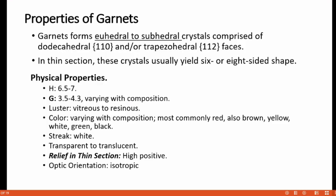When we discuss about the properties of garnet, it shows euhedral to subhedral crystals comprised of dodecahedral or trapezohedral faces. In thin section, these crystals usually yield six to eight sided shapes. If you look into the physical properties of garnet, these are generally characterized by a hardness of 6.5 to 7 and a specific gravity ranging between 3.5 and 4.3, varying with its composition.